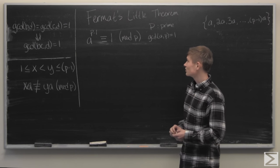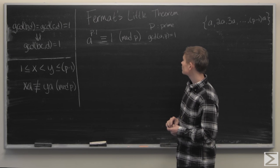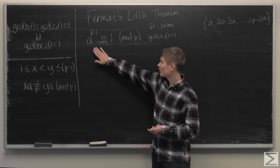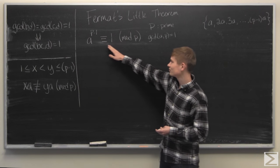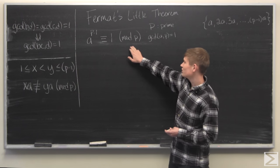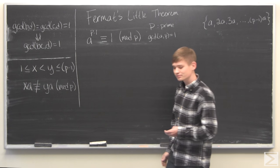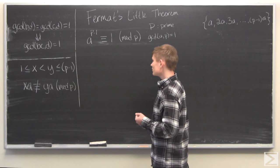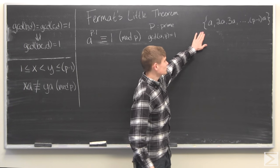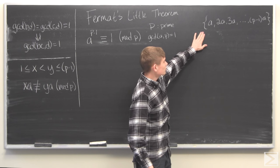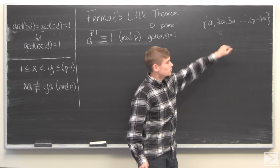This week's Advanced Knowledge Problem of the Week was to formulate a proof for Fermat's Little Theorem, which is that a to the power of p minus 1 is congruent to 1 mod p, where p is a prime number and a and p are relatively prime.